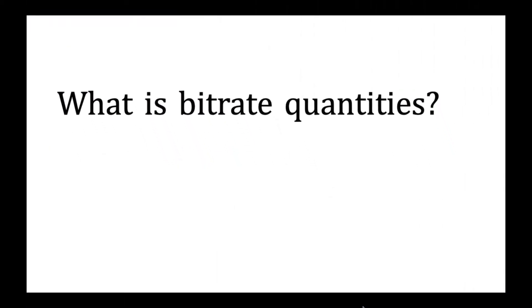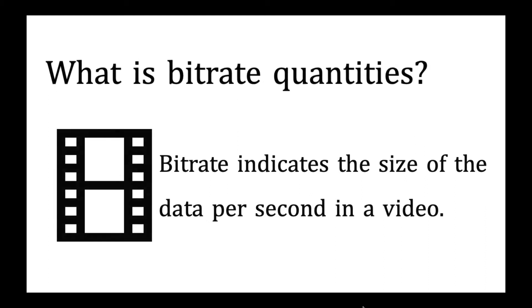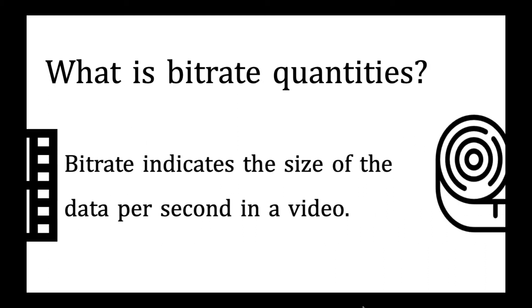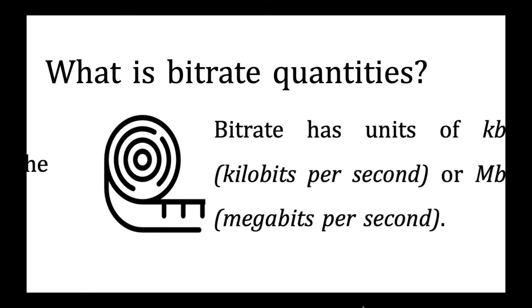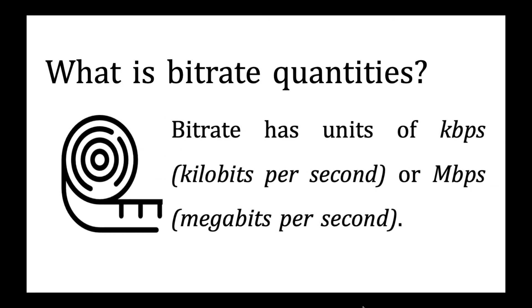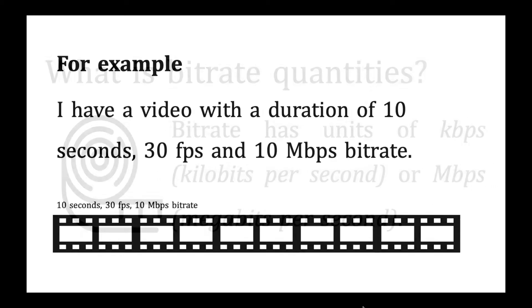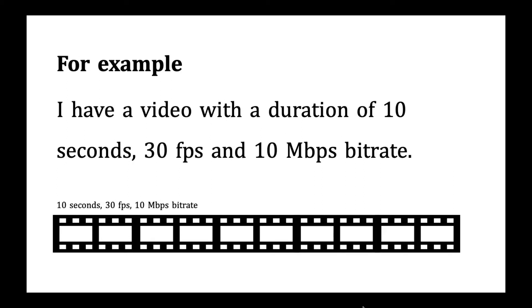What is bitrate? Bitrate indicates the size of data per second in a video. Bitrate has units of kbps or Mbps. For example, I have a video with a duration of 10 seconds, 30 fps, and 10 Mbps bitrate.